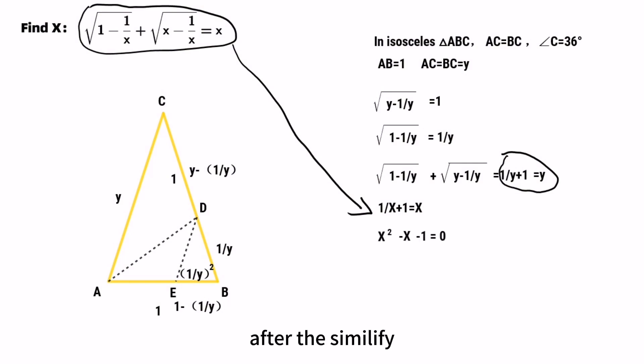After simplifying and calculating, X should equal 1 plus square root of 5 over 2. X is about 1.618.